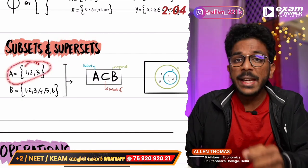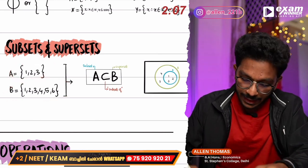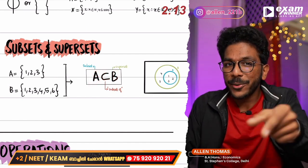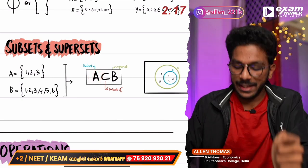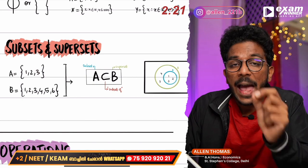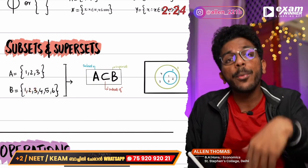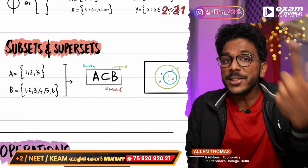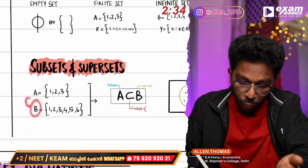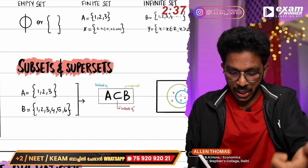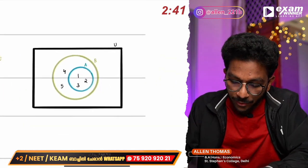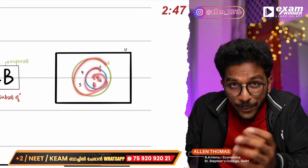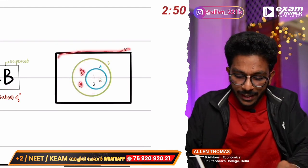A is a subset of B. A means all elements of A are in B. For example, if A = {1,2,3} and B = {1,2,3}, then A is a subset of B. B is a superset of A — B is a superset when A is a subset of B.